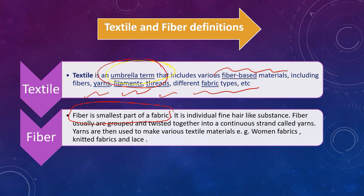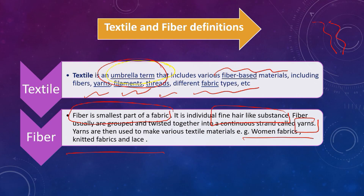If you further break that fiber into smaller parts, you will get molecules. A fiber is nothing but a hair-like fine structure. When fibers are grouped and twisted, it leads to the formation of a continuous array called yarn. From that yarn, we make different kinds of textile materials — for example, woven fabric, knitted fabric, lace. In woven fabrics, you can see that the little laces are the yarns.